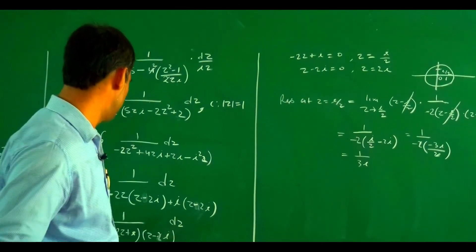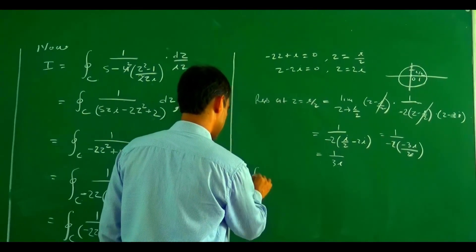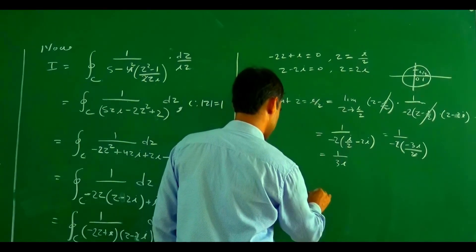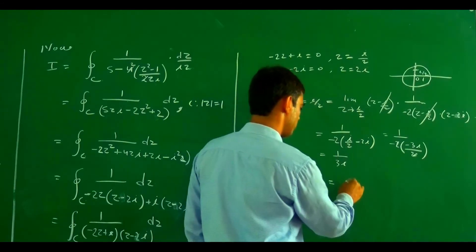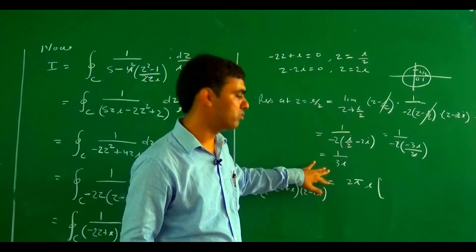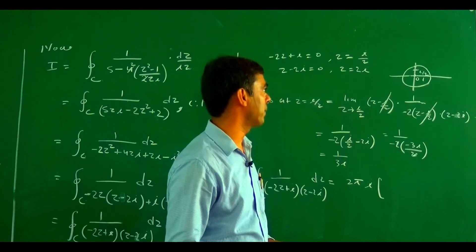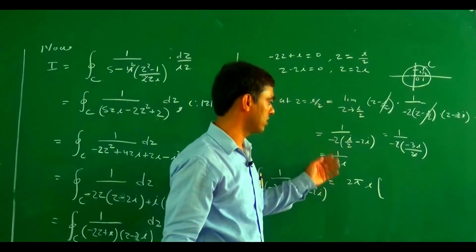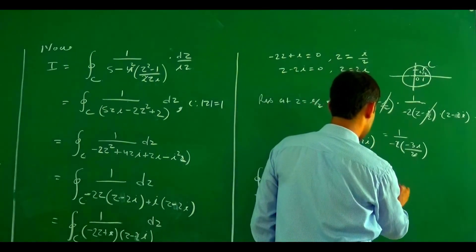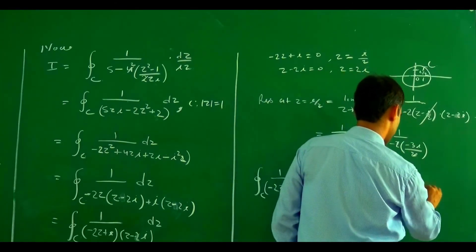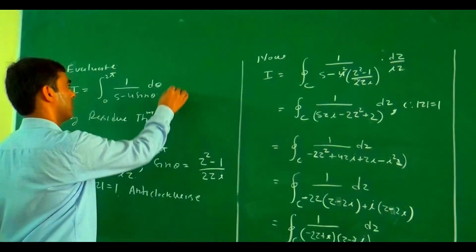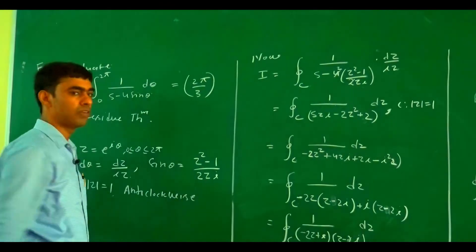By the residue theorem: ∮_C 1/(−2(z − i/2)(z − 2i)) dz = 2πi × (sum of residues at points inside C) = 2πi × (1/(3i)). The i terms cancel, giving the value of the integral as 2π/3. Therefore, ∫₀²π 1/(5 − 4sinθ) dθ = 2π/3.